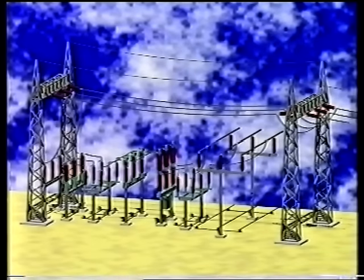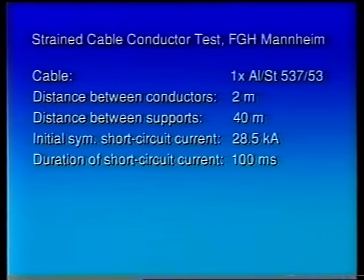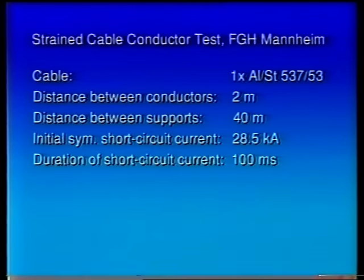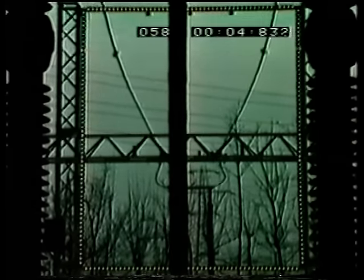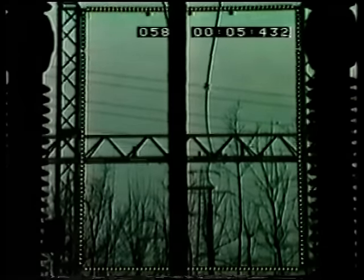The next test series shows impressively the behaviour of long spans, which are strained between insulator chains and supported by steel structures. The length of the span is 40 metres, and the clearance between phases is 2 metres. The root mean square value of short-circuit current is 28.5 kiloamperes. In addition to the already mentioned load maxima, short-circuit proof of long spans depends more on horizontal displacement of the cable. Already with 100 milliseconds short-circuit duration, the maximum swing-out angle is 180 degrees and produces maximum horizontal displacement.